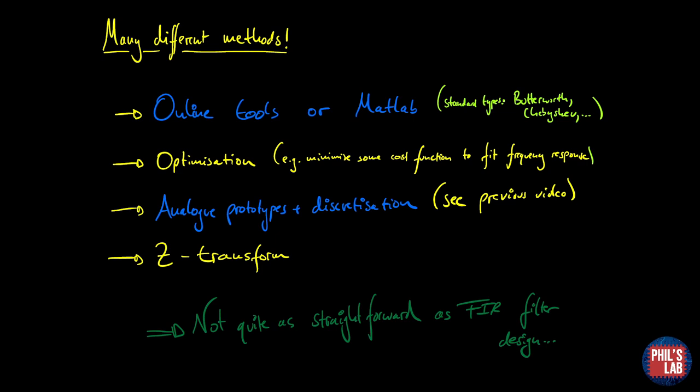Now there are actually quite a few different methods to do that. There are online tools or MATLAB which I'll show you in just a second which will compute these coefficients for you to get required filter characteristics. There are also standard filter types for example Butterworth, Chebyshev, Bessel and so forth. Another way of getting your IIR coefficients is via an optimization algorithm. So you might have some cost function and you'll essentially twiddle with these coefficients until you get that desired frequency response.